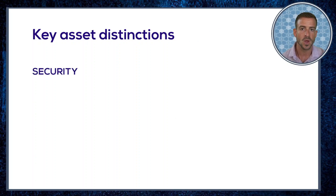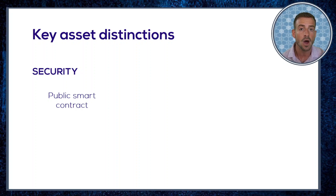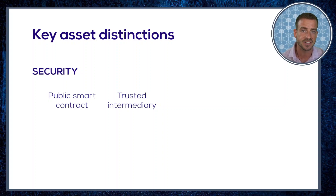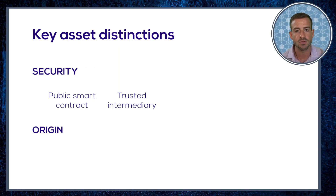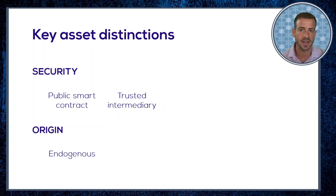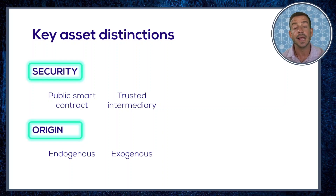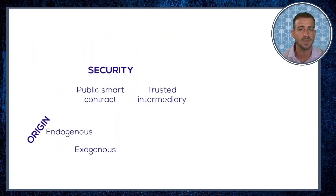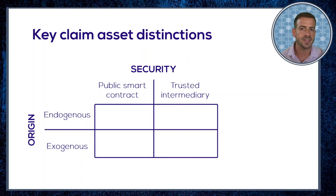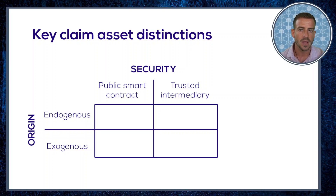To recap, we've highlighted four distinctions relating to two general attributes. First, the security of our claims — in the best case secured automatically and trustlessly using smart contracts on a public blockchain; otherwise relying on a trusted intermediary. Second, how goods are sourced: endogenously within the digital asset economy, hopefully to some economic advantage, or exogenously from outside. These two pairs of properties are independent of each other, so we can fit them on a two-by-two matrix, which can be a useful aid when designing or analyzing token economies.